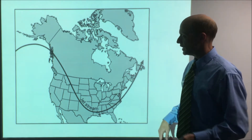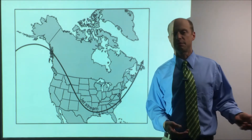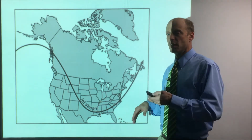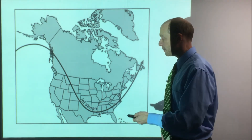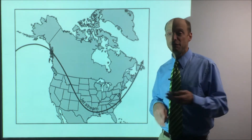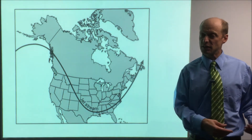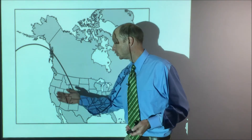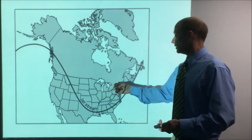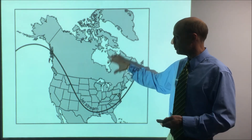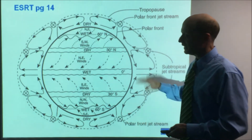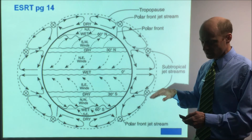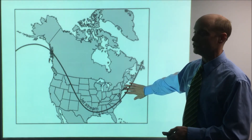The jet stream consists of upper-level winds up to 300 miles an hour or more, and they really help push the highs, lows, and air masses around. This is the common sort of path of the jet stream, but it varies and changes. You see this on the evening news as well — meteorologists are always watching the jet stream as it changes. You just have to recognize that the jet stream kind of works like that.